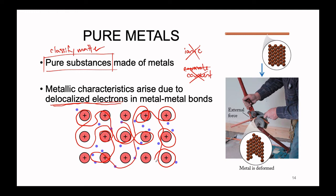This bonding arrangement is exactly what gives metals all of their unique properties. High electrical conductivity occurs because these electrons are able to travel wherever they need to go. So if we suddenly plug this metal into some type of electrical socket, which gives us an excess number of electrons, these electrons are going to be able to jump straight into the metal and shoot straight on through the structure because they're not going to be trapped in any one specific location.